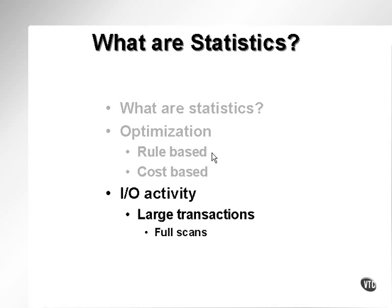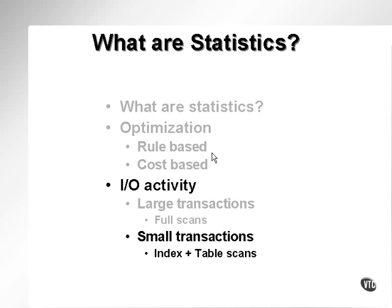The most obvious effect of optimization and statistics is generally in retrieval of data in terms of I/O activity, where large transactions will generally force full scans of tables and indexes, but mostly tables, and small transactions will encourage the optimizer to execute SQL code by reading an index first and then executing a read into a table using a row ID — finding an exact hit or a small number of rows from the row ID connection between the index and the table. Statistics are very important to the performance of a database.